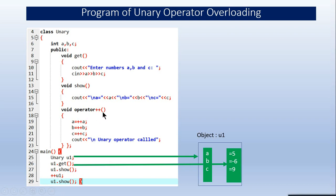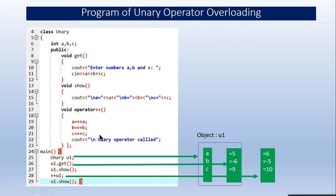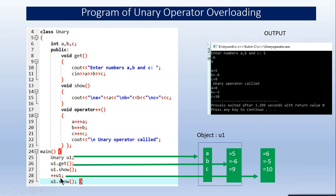No arguments or return type are needed for this unary operator, as per the rules. Control transfers to line 17, where the basic increment operation is performed: ++a, ++b, and ++c are executed on the integer variables inside the class. After calling this overloaded operator, calling show again displays the incremented values: 5 becomes 6, minus 6 becomes minus 5, and 9 becomes 10. You can see the output confirming this. You can practice overloading the decrement operator by yourself.